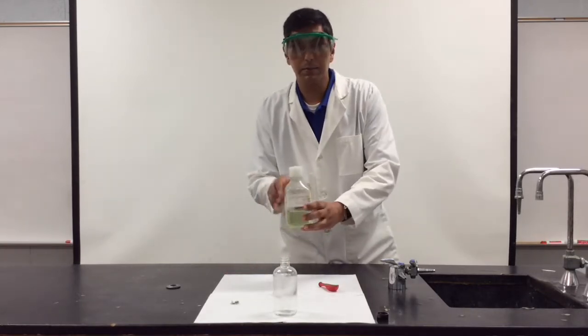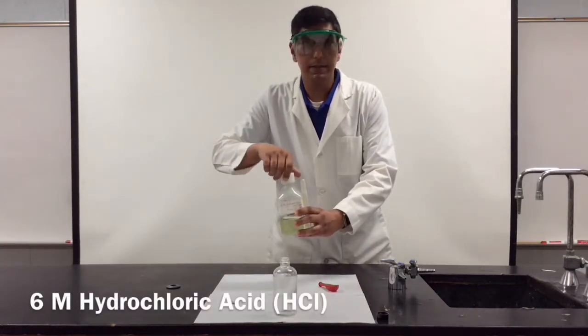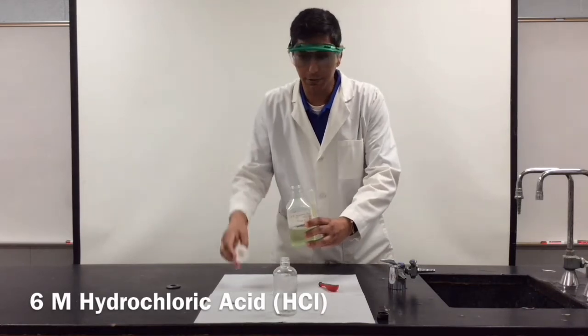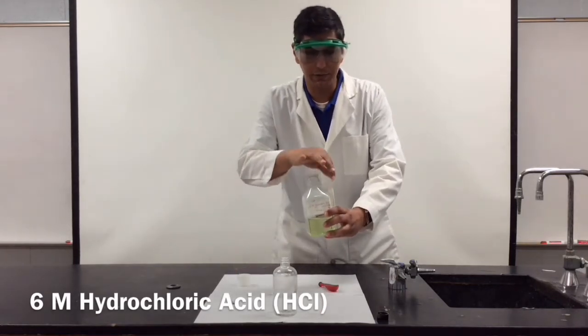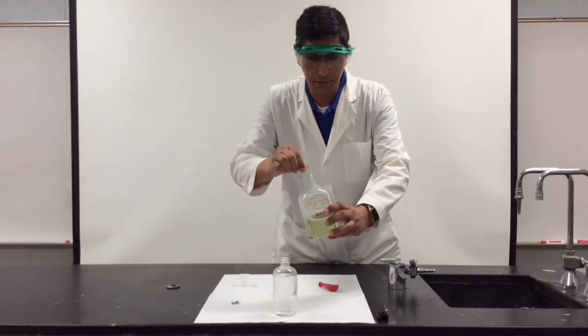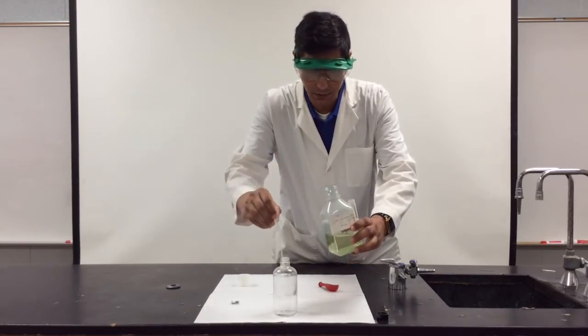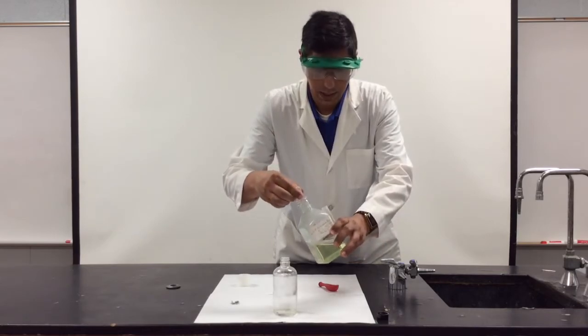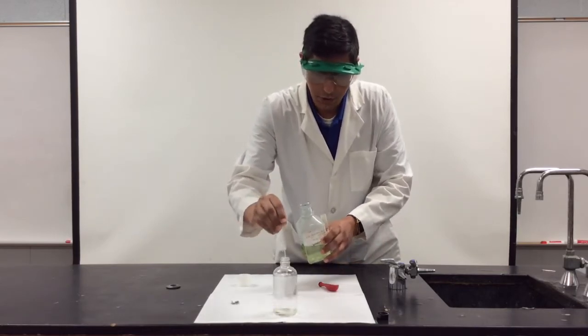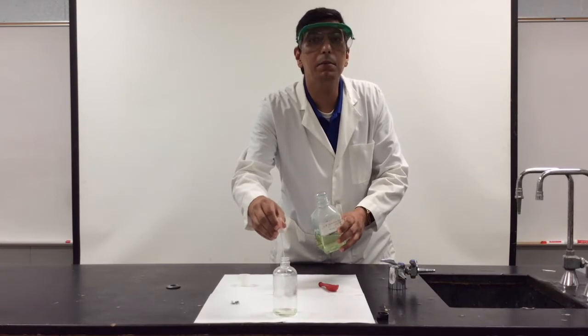Now today we're going to be taking some hydrochloric acid. This is six molar hydrochloric acid so it's relatively concentrated. I'm going to put about four milliliters of this into a glass bottle and to that I'm going to add zinc metal.